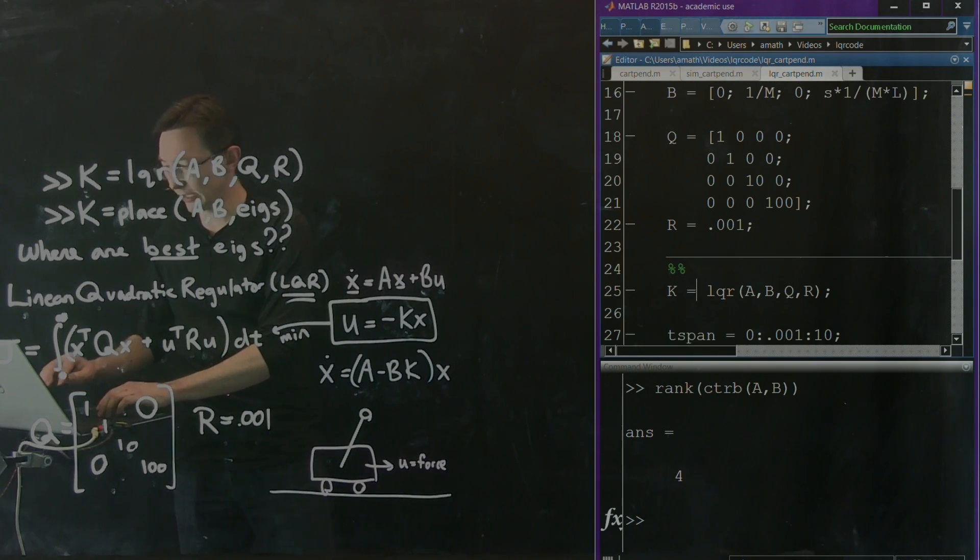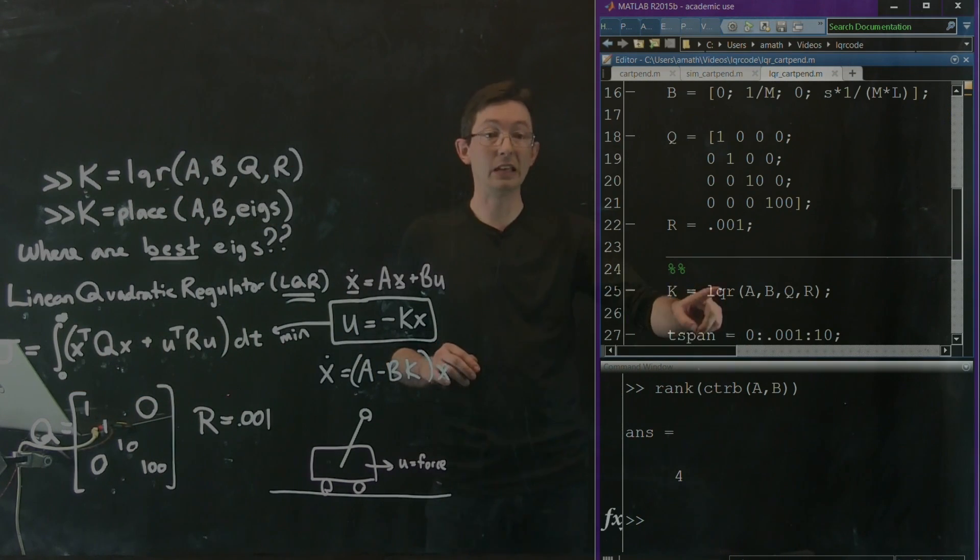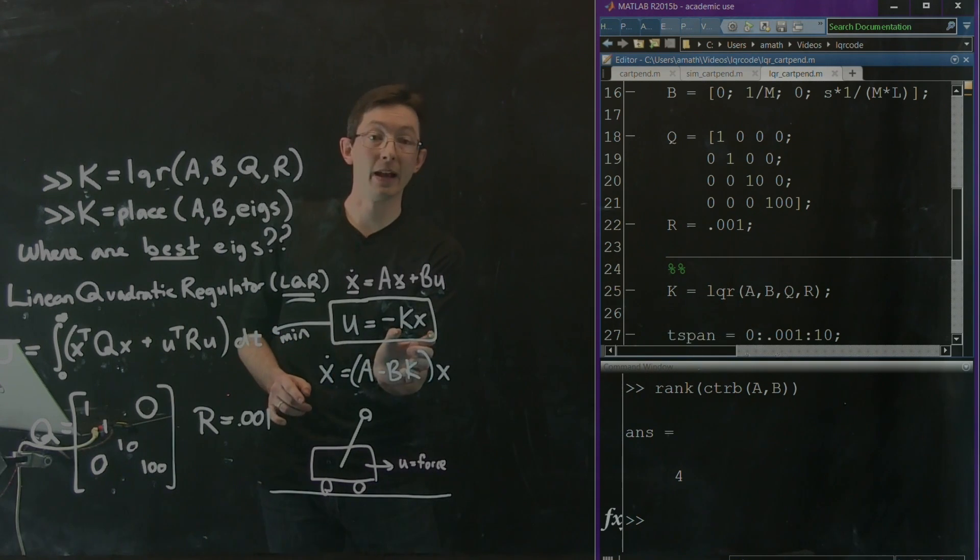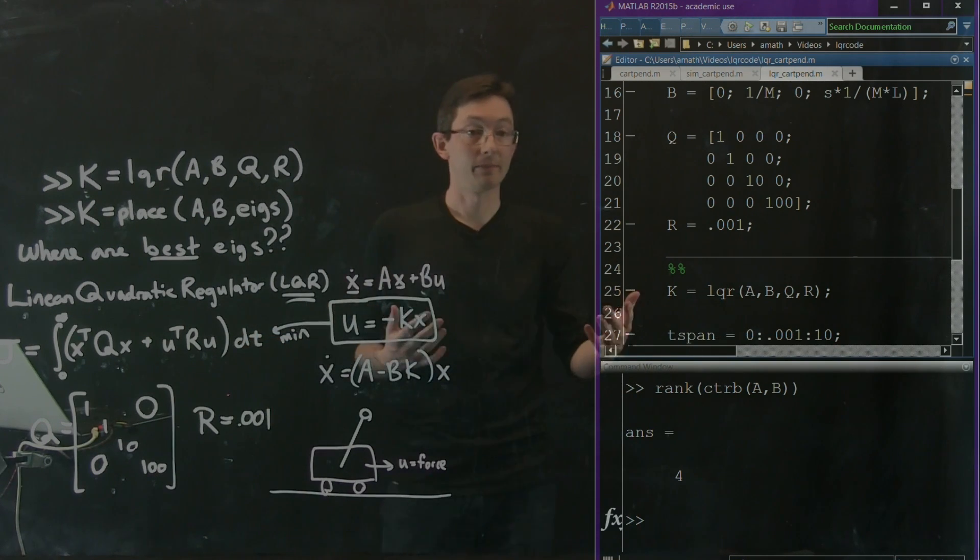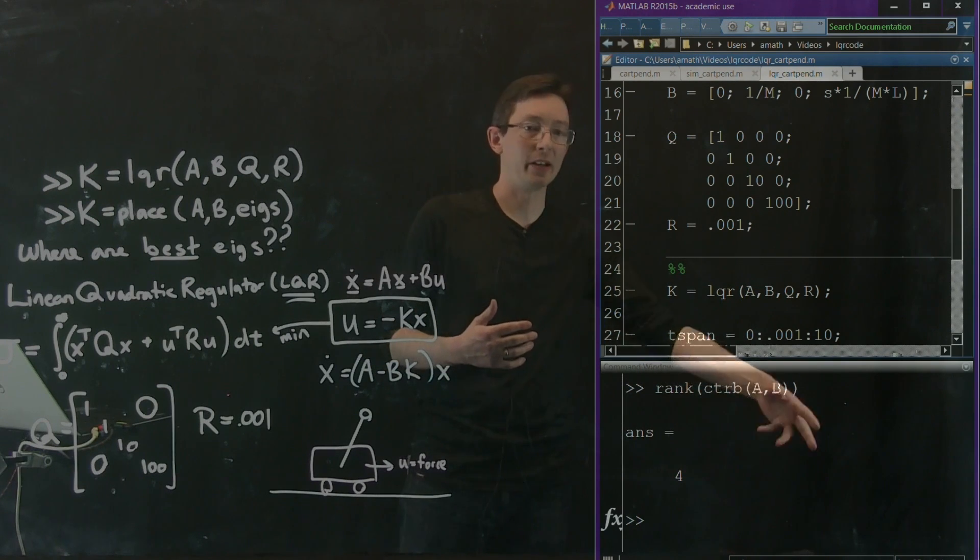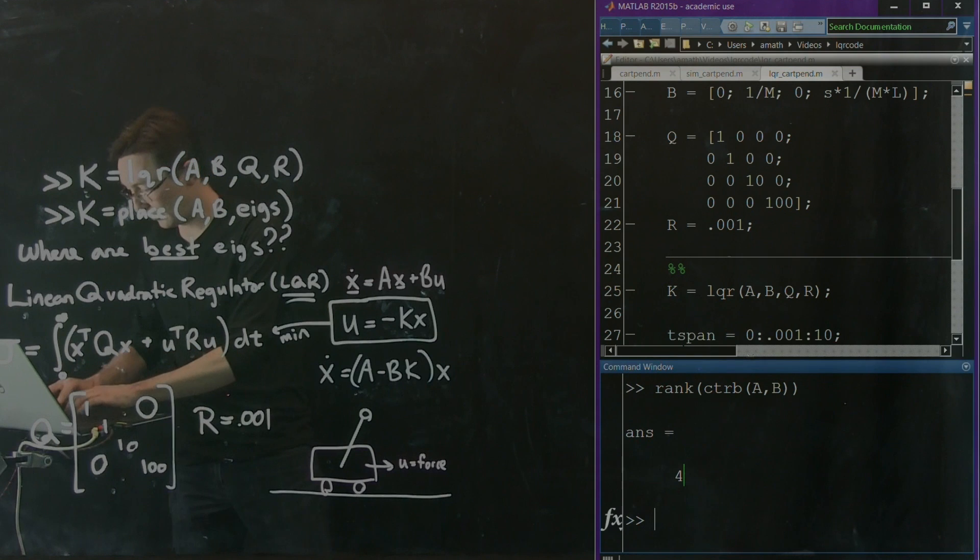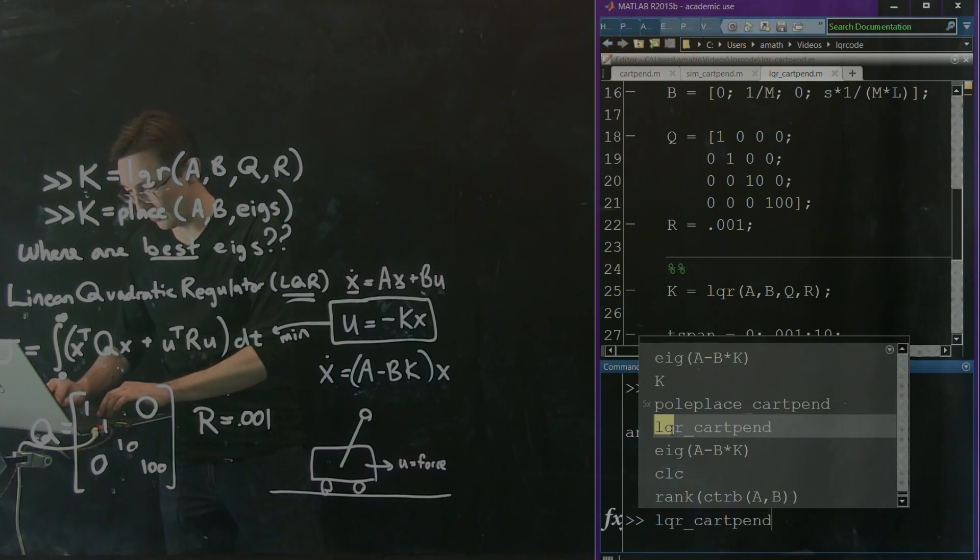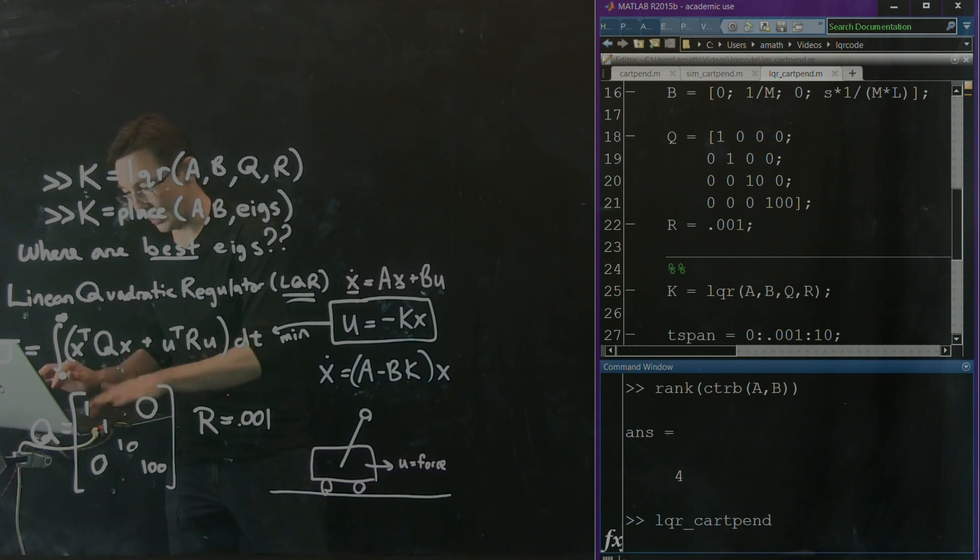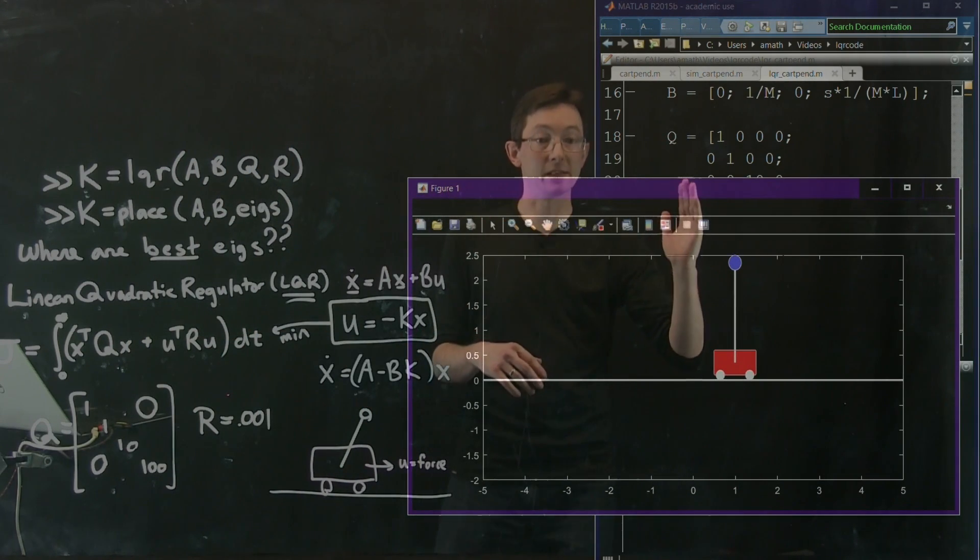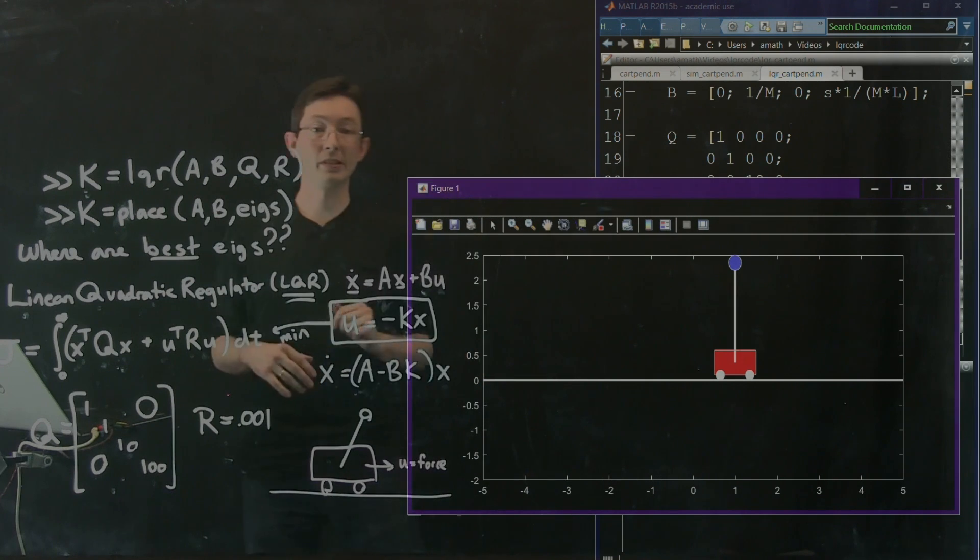So I run this one simple command, K equals LQR, and that gives me my optimal state feedback law for this case. We run the same code to simulate the nonlinear system with ODE 45 and plot. So I think we're ready to go. Let's try this out. LQR cart penned. Enter. Let's go. So it finds K and it simulates and it does this nice aggressive stabilization to that position I told it to. So this works like a dream.